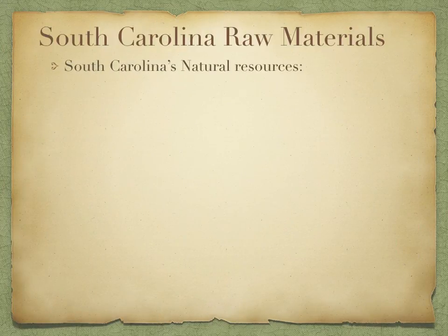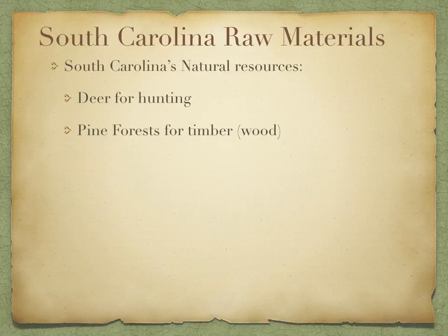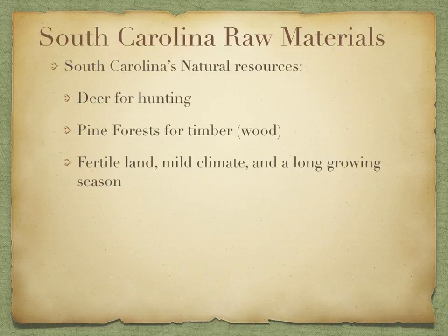South Carolina had a lot of natural resources used to get rich. There were deer for hunting, pine forests for timber and wood, and those pine forests also provided naval stores — pitch, tar, and rosin — for which they received subsidies. There was also fertile land, a mild climate, and a long growing season. The land was very fertile, the climate was mild — not too hot, not too cold — and the long growing season was a major advantage.